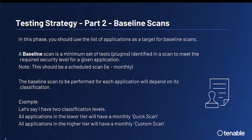Part two of the testing strategy is establishing baseline scans. In this phase, you'll utilize the list of applications from the previous step as targets for your baseline scans. A baseline scan is a minimum set of tests — or plugins in Tenable language — identified to meet the required security level for a given application. This should be a scheduled scan, for example monthly. The baseline scan performed for each application will depend on its classification. For instance, with high and low criticality tiers, lower-tier applications get a monthly quick scan, while higher-tier applications get a monthly custom scan.